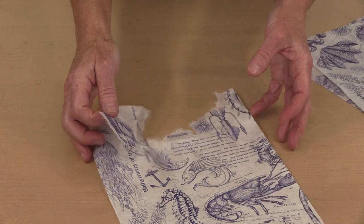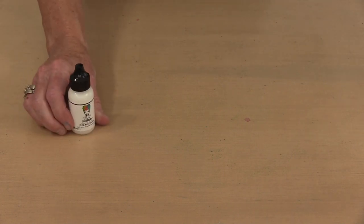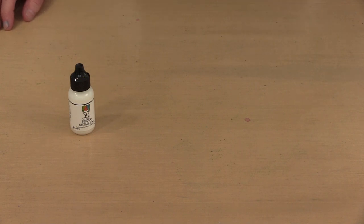Adhering rice paper to a surface is pretty straightforward. You have two options: a wet adhesive like gel medium, or a dry adhesive like our sticky stuff. Either works.